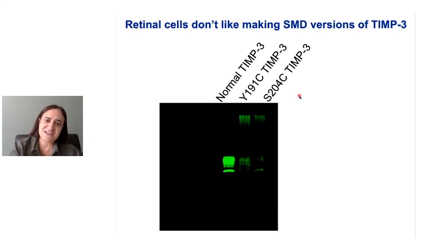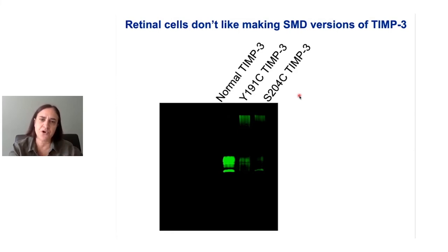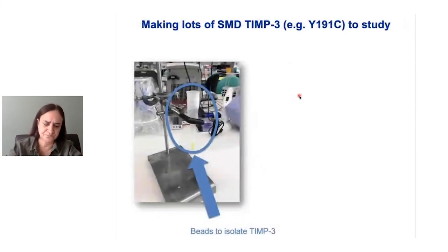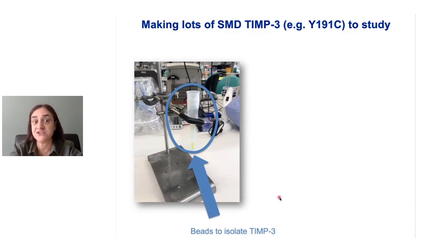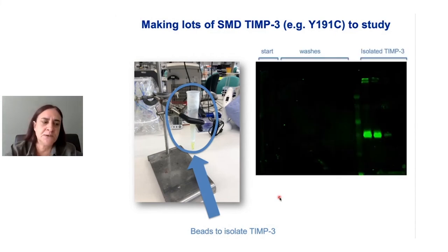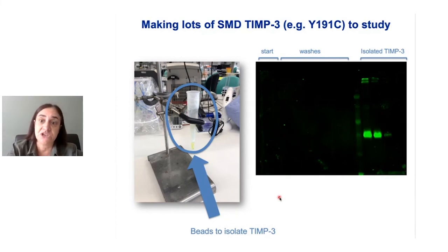I suppose this shouldn't have surprised us because science is never simple or easy. What it's told us is that we're going to have to isolate the TIM3 — purify it away from the other components of the cells — and then standardise the amount of TIM3 that we give back to the cells so that we can compare them directly. To do that, Jacob has been isolating normal and variant forms of TIM3. He uses special beads in a tube that are able to fish out the TIM3 from the cell extracts, and we can see that Jacob has successfully isolated the TIM3. Now we can standardise the amount that we add back to cells so that we can compare them directly.